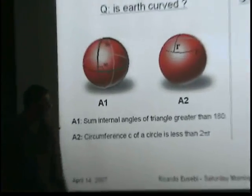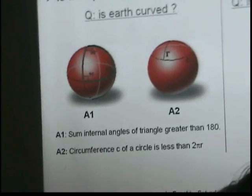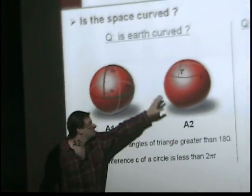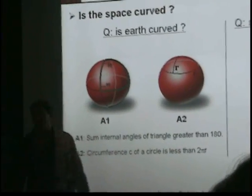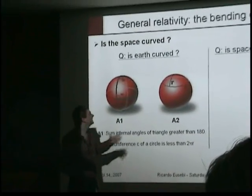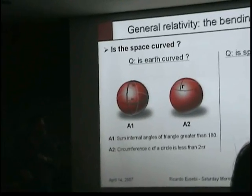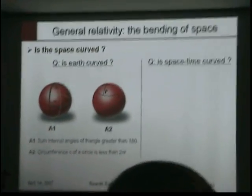And the circumference of the circle is not 2 pi r. So if you have a circle, any circle, and you have a radius, you expect the circumference to be 2 pi r. But only, again, if you draw it in this flat surface. If you try to do this, you will see that this is not the case. In this particular case, the circumference of a circle is less than 2 pi r. It doesn't have to be less. It could be more. That only depends how the space is curved. That's the way we measure whether the space is curved.